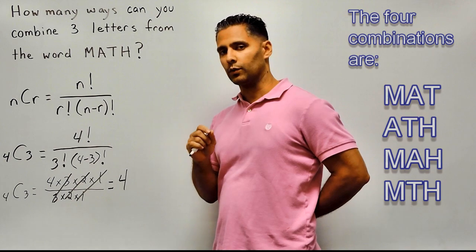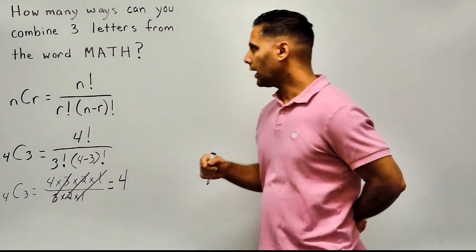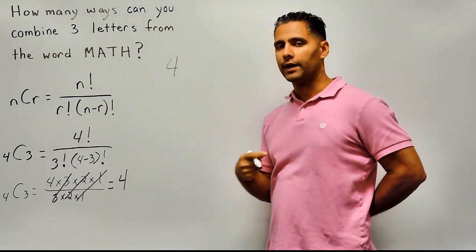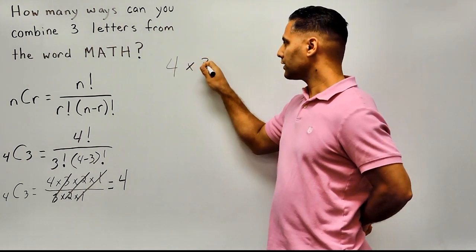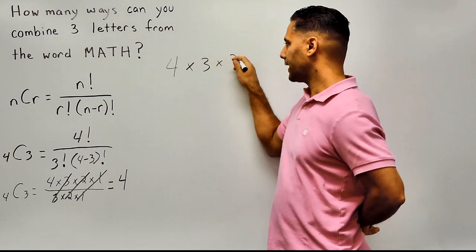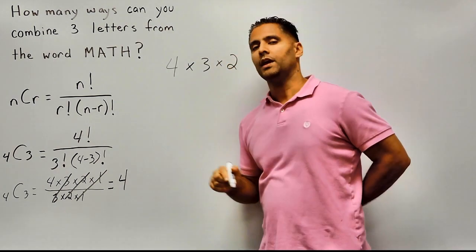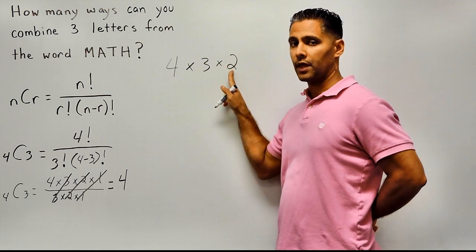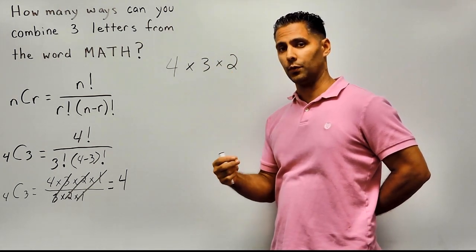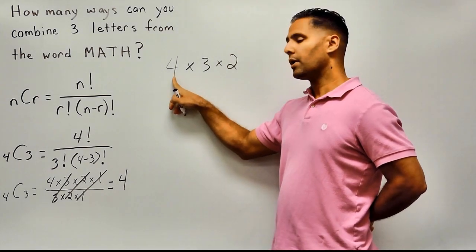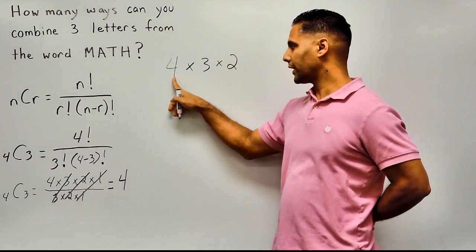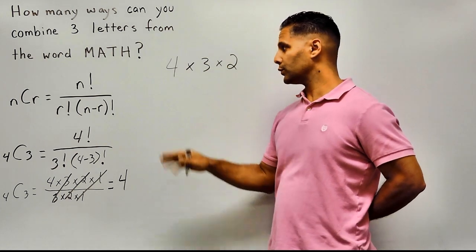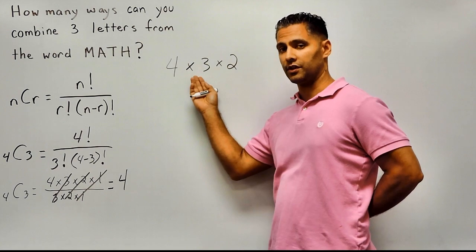Now let's do a slightly quicker way of the NCR function. If you know how many total objects you have, write that number — which is four — and then write part of that factorial. To figure out how much of the factorial to write, if you are choosing three elements from the total, only go backwards the first three numbers in your factorial: four times three times two. If you were selecting two numbers out of the four, you would just do four times three.